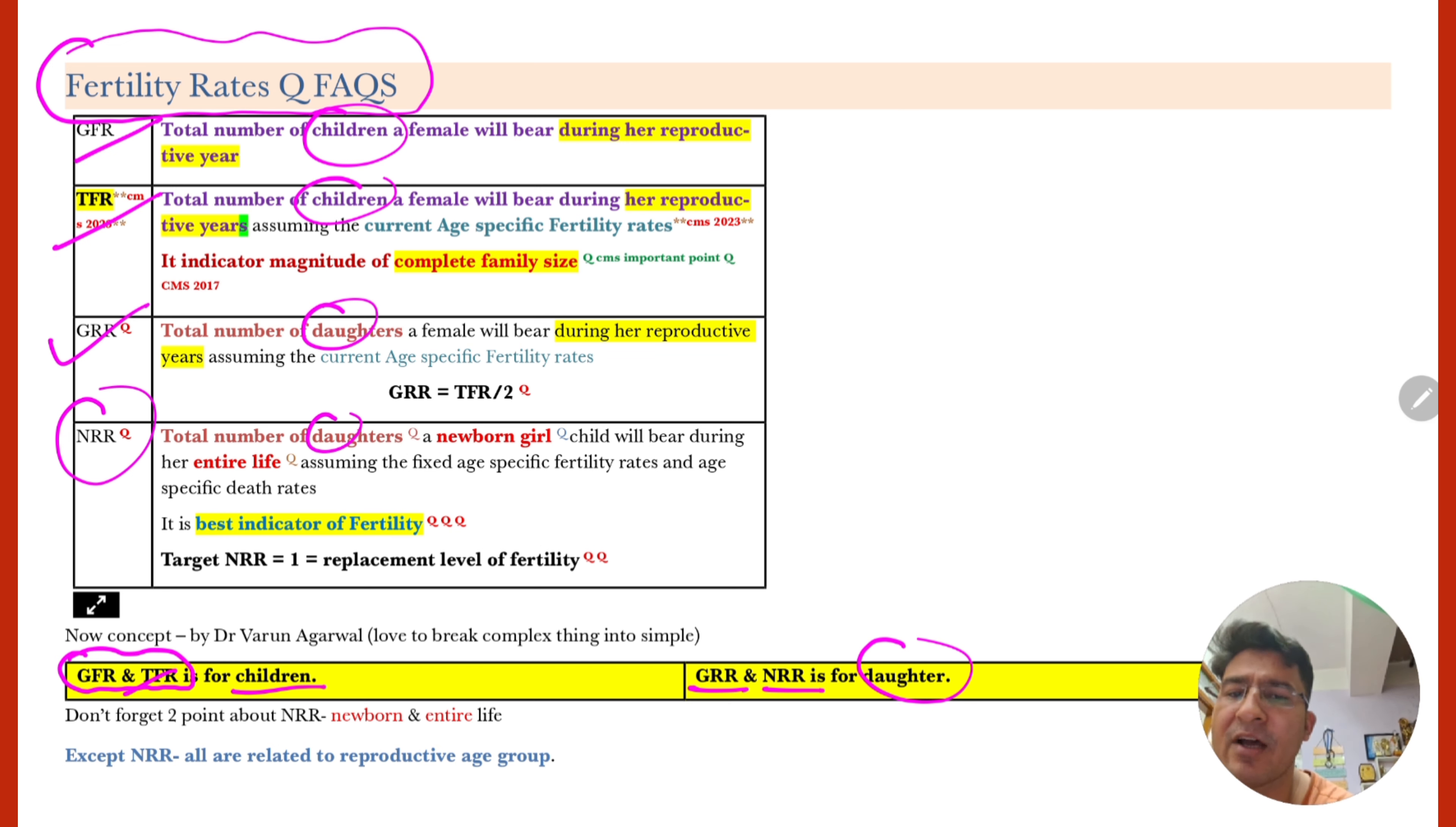So yeh to confuse. Agar aap samaj sakti ho. Agar TFR mein question mein diya hua hai daughter, iska matlab woh option galat hai. Or NRR mein agar children diya hua hai, to bhi woh question option galat hai. So pehle iska matlab kya hua. Shuruwat ke do for child. Children. And niche ke do diya hua hai for daughter. Easy yeh. Again aage chalte hain. Don't forget two point about NRR. Kya hai woh do point. Isme ek to newborn diya hai. Dusri baat enter hai. Life diya hai. Question yahan se ghumta hai. Right. So NRR mein newborn ke bare mein, newborn girl ke bare mein baat ki gayi hai. And entire life ke bare mein comment ki gayi hai. Baki sab mein all related to reproductive age group. Jaise reproductive age group ke bare mein baat hui hai. GFR mein. TFR mein bhi reproductive age group ke bare mein baat hui hai. GRR mein bhi reproductive age group ke bare mein baat ki hai.